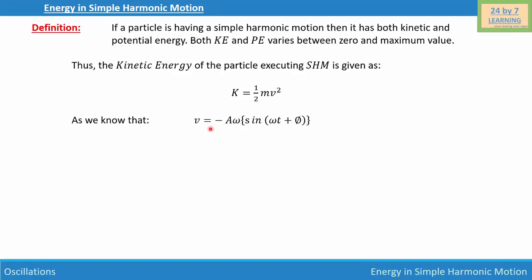We substitute this value of v into the kinetic energy equation, giving K = ½m(−Aω sin(ωt + φ))².